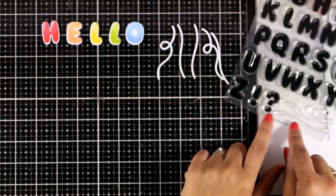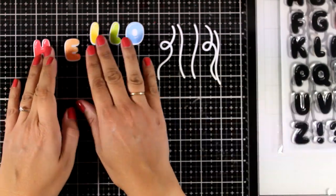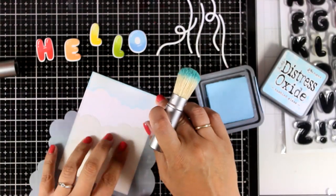In the stamp set there are stamps that you can use for the strings. I decided to not use them at all since I don't have any black lines around my balloons. I don't need to have black lines for the strings either.